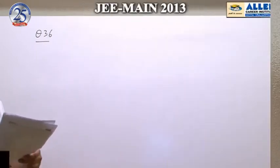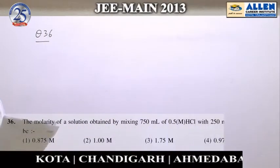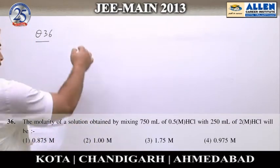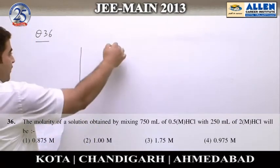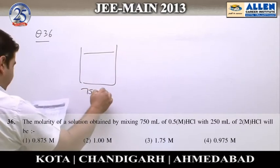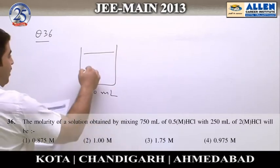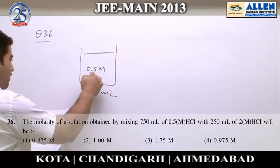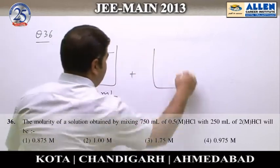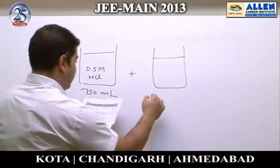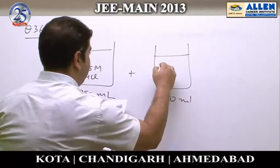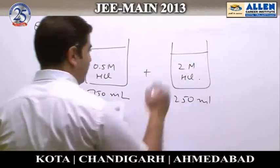Question number 36 is a problem based on the mixing of solutions. We are given the first solution having volume 750 ml and molarity 0.5 molar of HCl, added to another solution having volume 250 ml and molarity 2 molar of HCl.